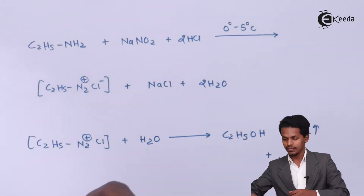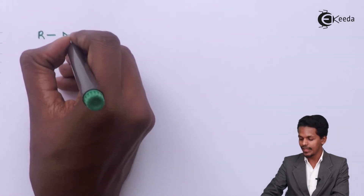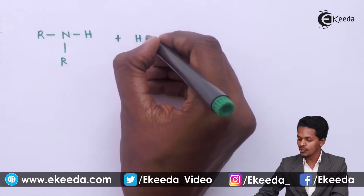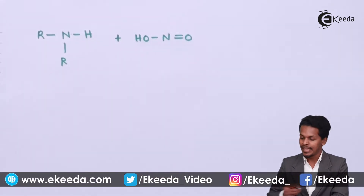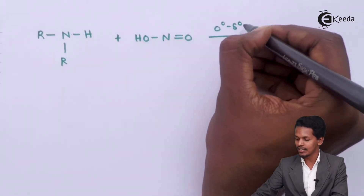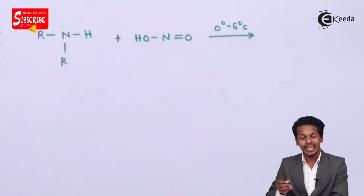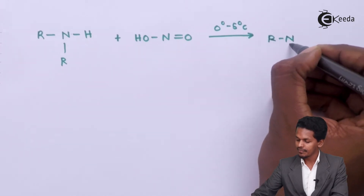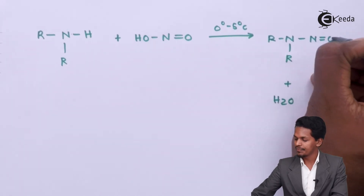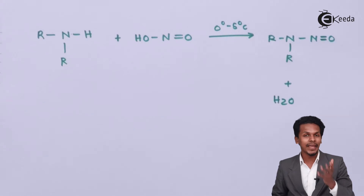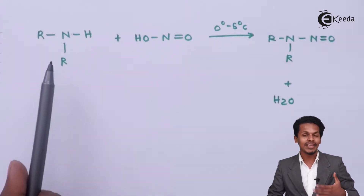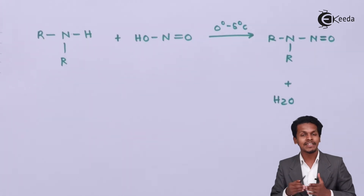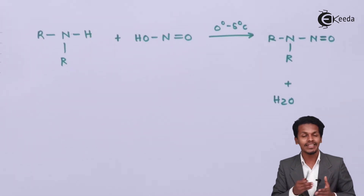Now for secondary amines: consider R2NH reacting with HNO2 at 0 to 5 degrees Celsius. Here, H2O is removed as a byproduct, and the product is R2N-N=O (an N-nitroso compound). This product has a pale yellow color, which helps us distinguish a secondary amine from primary and tertiary amines.